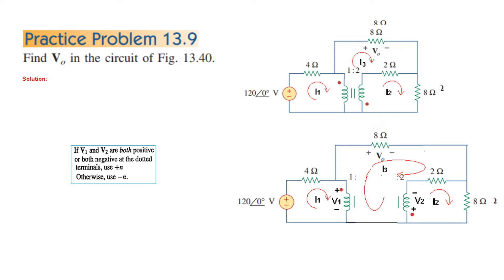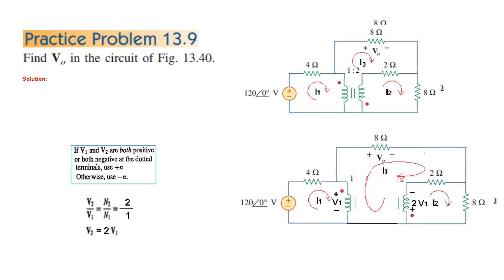So our equation becomes positive and we don't have to go into negatives — though you can do it otherwise if you prefer. The voltage polarity is now marked. We know the relation between V1 and V2 is 1:2, meaning V2 over V1 equals N2 over N1 = 2/1, so V2 = 2V1. Therefore, we will replace V2 with 2V1 to minimize the number of variables.